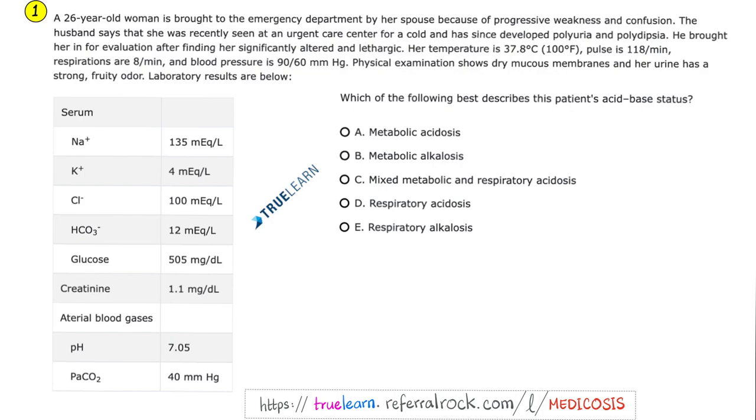Please pause and try to answer it yourself. We have a 26-year-old woman brought to the emergency department by her spouse because of progressive weakness and confusion. The husband said that she recently had a cold and has since developed polyuria and polydipsia. There is lethargy and altered mental status, some low-grade fever and tachycardia. Respiration 8 per minute. Blood pressure is low. Mucous membranes are dry and the urine has strong fruity odor. Let's look at the labs.